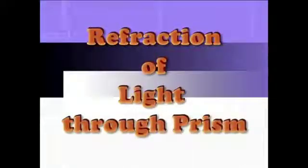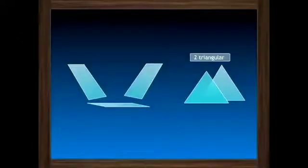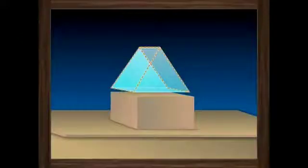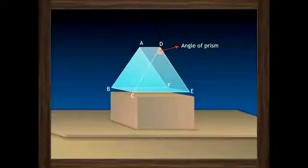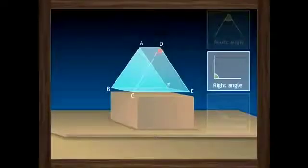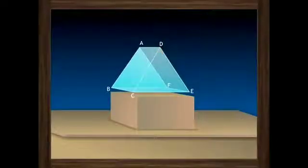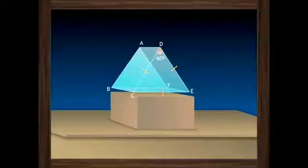Before we begin, let us learn what a prism looks like. A prism has two triangular bases and three rectangular surfaces. The angle D is the angle of prism — the inclined angle — which can be acute, right, or obtuse. If the triangular bases are equilateral, then it is an equilateral prism with an inclined angle of 60 degrees. A prism can be made of glass, plastic, or even liquid.